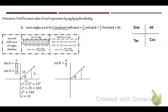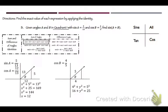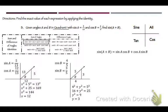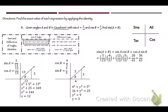For angle B, cosine B is 4/5, so the adjacent side is 4 and hypotenuse is 5. Pythagorean theorem: 16 + y² = 25, so y = 3 and sine B = 3/5. Now we have all four values. Sine of A plus B = (5/13)(4/5) + (12/13)(3/5) = 20/65 + 36/65 = 56/65. That does not reduce.